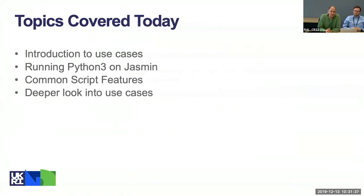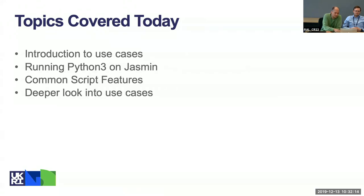So what are we covering today? We are going to talk about some use cases of how you might want to run Python scripts on JASMINE, mainly focused on data analysis and working with data in the CEDA archive. We are running Python 3 and will take some time to talk about common features of these scripts — things they have in common that you might be able to reuse. Then we'll go into more detail about the four use cases and analyze some of the Python code along the way.